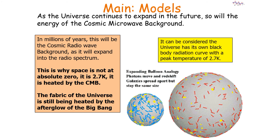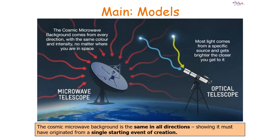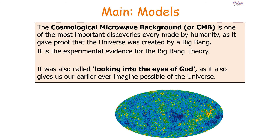The fabric of the universe is still being heated by the afterglow of the Big Bang. The universe has its own blackbody radiation curve with a peak temperature of 2.7 Kelvin. The cosmic microwave background is the same in all directions, showing it must have originated from a single starting point of creation. The CMB is one of the most important discoveries ever made by humanity, giving us proof that the universe was created by a Big Bang.